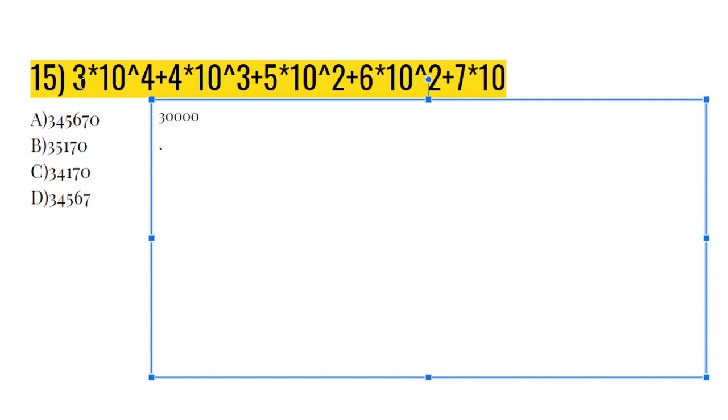Our next one is 4 plus... And it's 4 times 10 to the power of 3. So that's 1,000. That's plus... So that would be 1,000 times 4. So that would be 4,000.